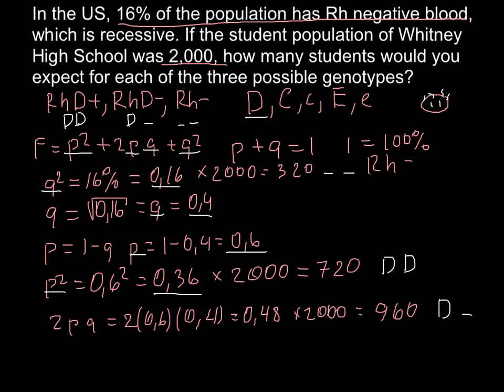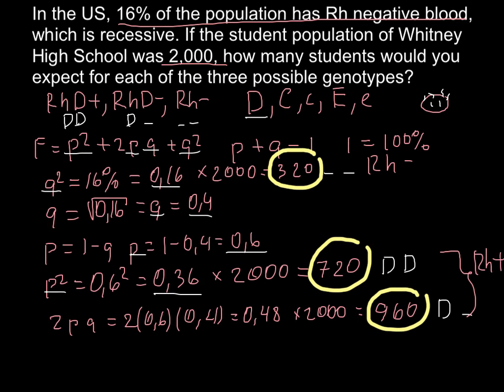So as you see, our answer here would be 960, 720, and 320. So all together, if we combine all these numbers, we are going to get 2,000 people. And these two groups, that is homozygous dominant and heterozygous, would be Rh positive. So these two groups would be Rh positive, and this group here would be Rh negative.